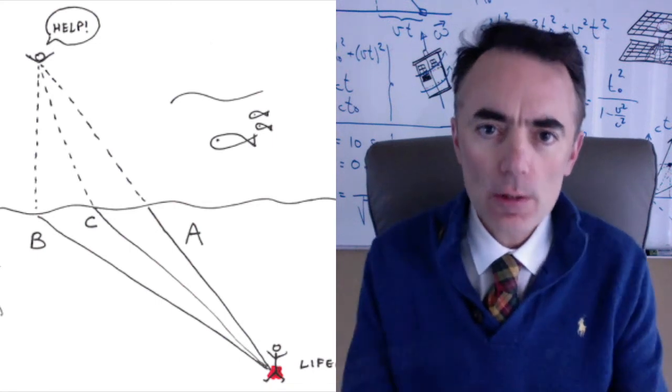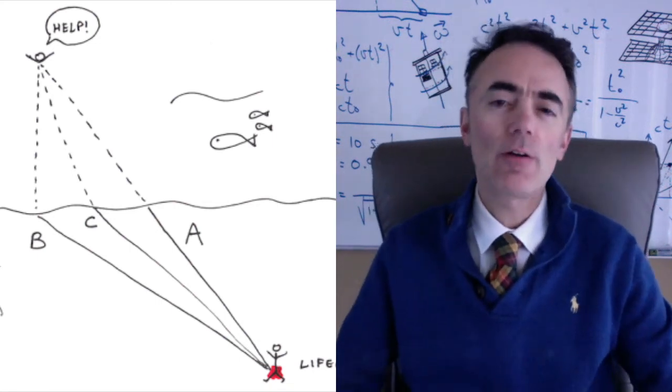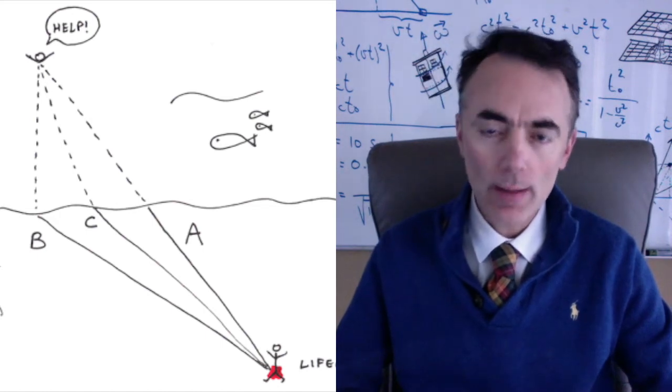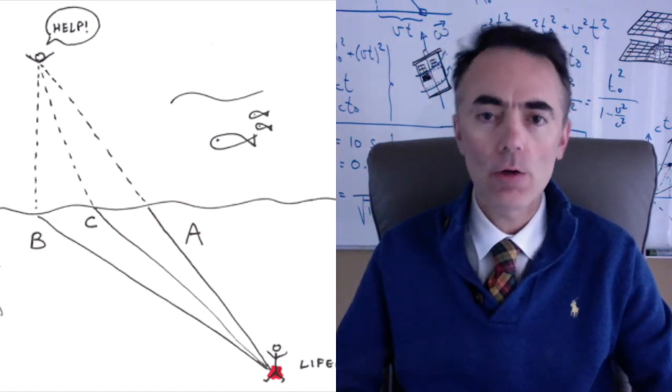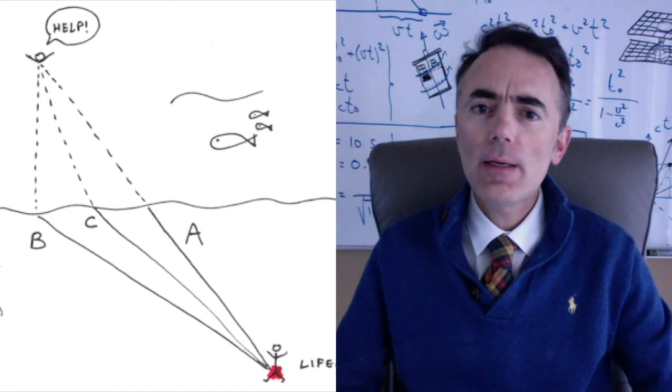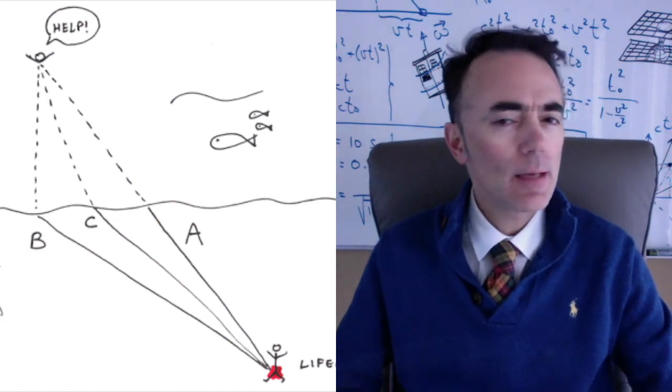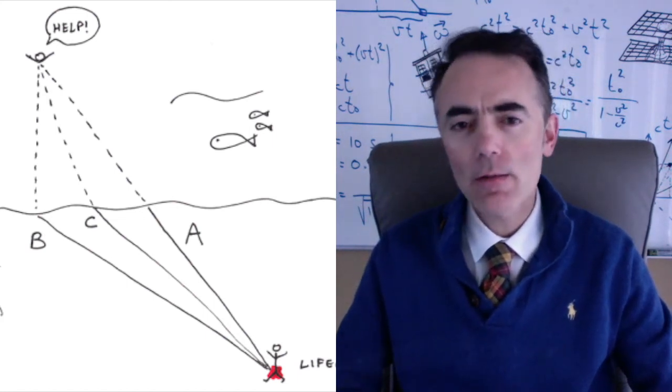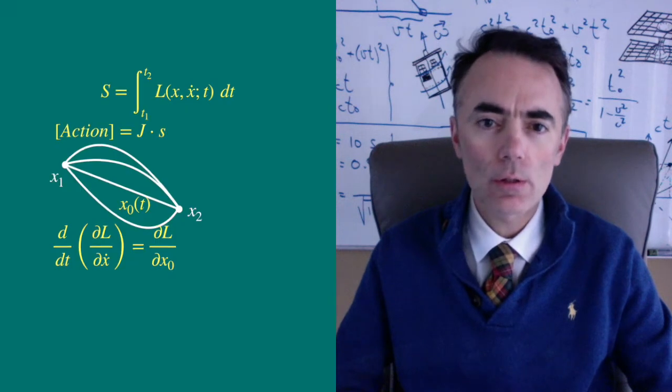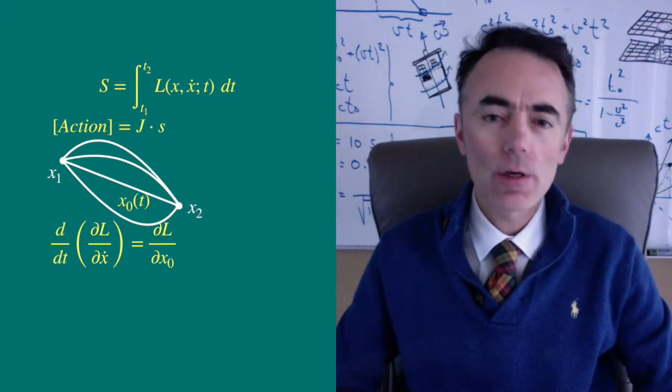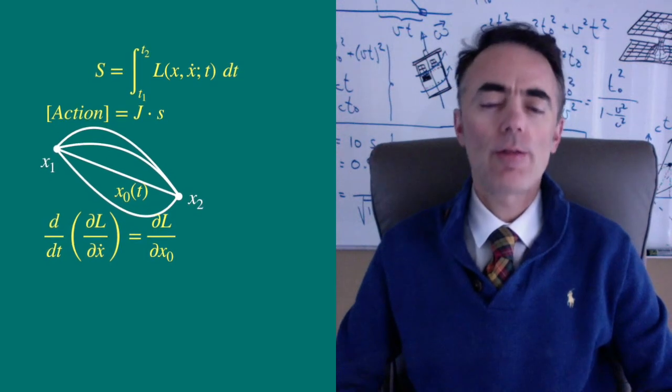The function x of t that yields a stationary value of the action S between x1 and x2, we call it x0 of t. There is this theorem that says that x0 satisfies the following equation, which is Euler-Lagrange equation. Let's demonstrate this theorem.